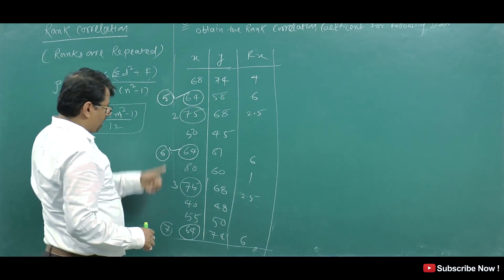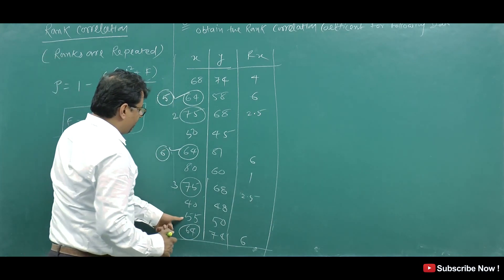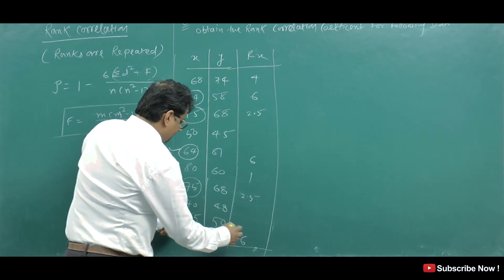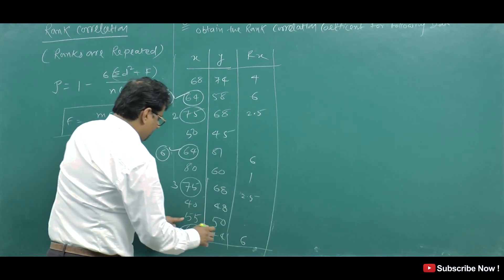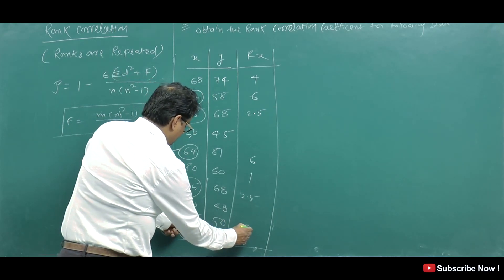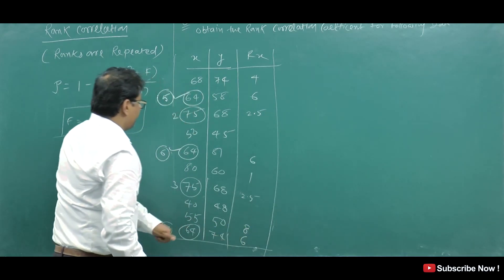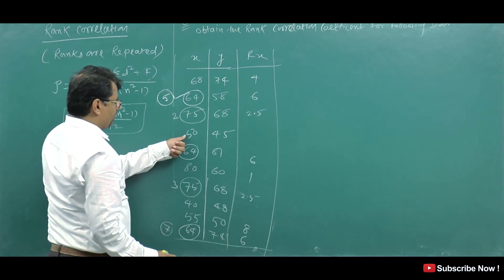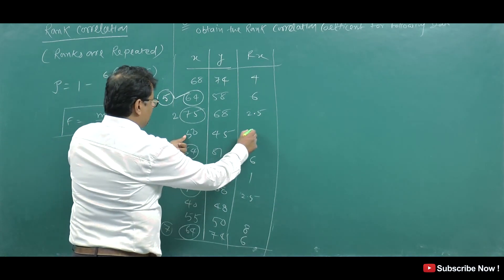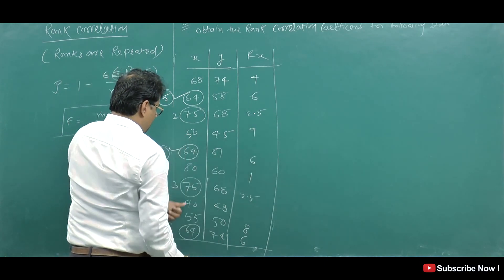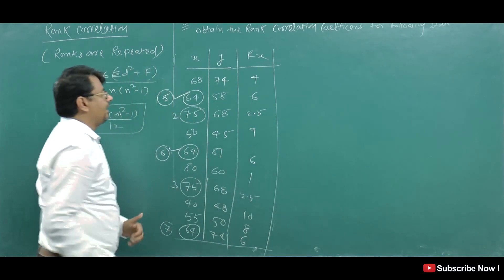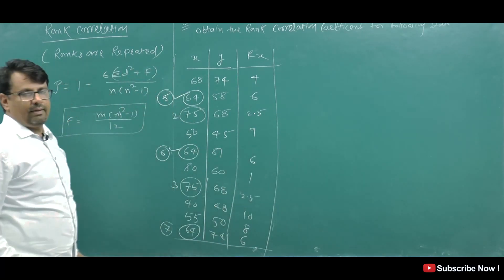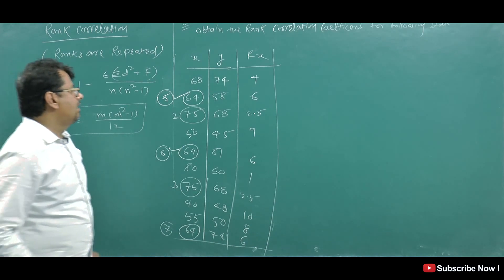After the repeated 64s, the next value gets rank 8, then rank 9, and after 40 the last value gets rank 10. So in this way we assign all ranks for x.